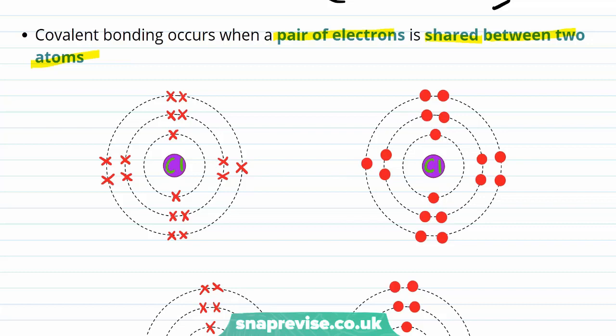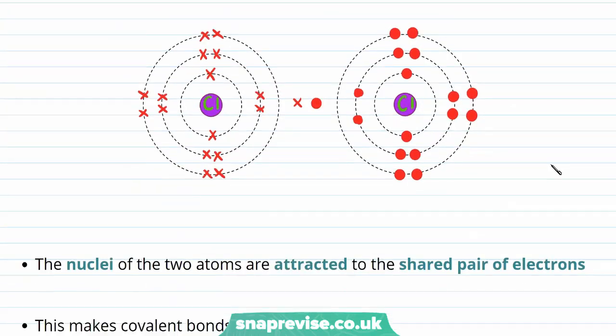And therefore, when they bond with another chlorine atom, the easiest way for them to do this is to share one electron each, which we can see in our next diagram.